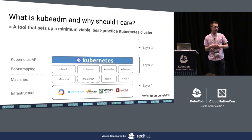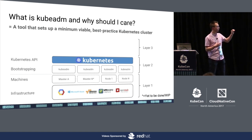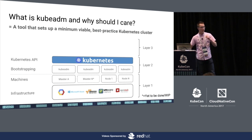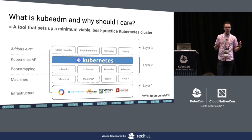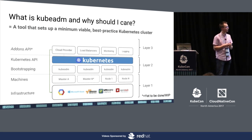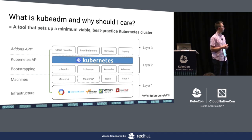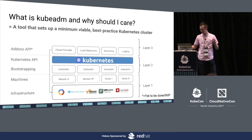KubeADM doesn't install all the things for you — that's left up to the user at layer three. That could include things like cloud provider add-ons, which we're currently wanting to extract out of core. Currently about eight cloud providers are built into core, but that has severe limitations, so we're actively moving those out to run as normal controllers on top of Kubernetes. It could also be load balancers, monitoring, logging — whatever — but that's left up to the user.